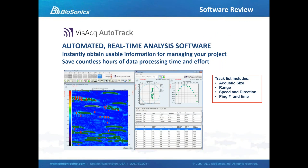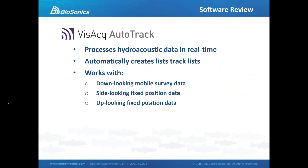In addition to the functionality from Visual Habitat, within Visual Aquatic we are incorporating the processing tools currently available in Vizac AutoTrack — this is Biosonics' fisheries processing software. It allows the user to create lists of fish tracks showing the acoustic size and location. If we're in a fixed location when we collect our data, we can also get a measure of the speed and direction of travel of every target detected. Vizac AutoTrack is compatible with down-looking mobile survey data, side-looking data collected in a fixed position, as well as up-looking data collected from a seafloor observatory.